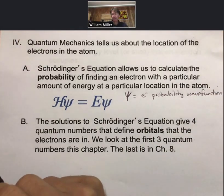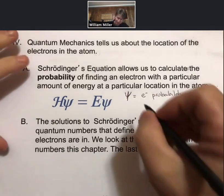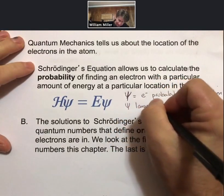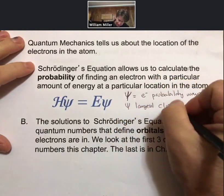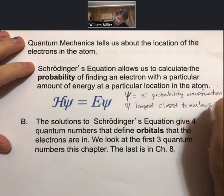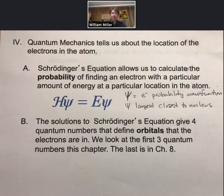And a couple of things we will know about psi, and that's all. First off, psi is largest closest to the nucleus, and that's because the electron is attracted to the nucleus. So psi largest closest to nucleus.